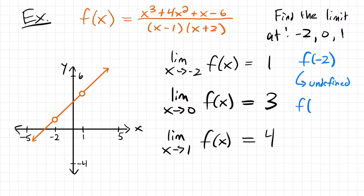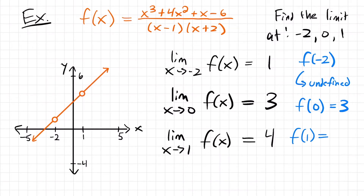Now let's look at the function at the point 0. In this case, 0 does have a value — we plug in 0 and we get 3. So those two things match up: our limit goes to 3 from both sides as we approach 0, and the function at x equals 0 also equals 3. At x equals 1, just like at negative 2, we have a hole, so the value is also undefined. The limit is not always going to match up with our actual value, because a limit only describes what is happening near a point, not necessarily what the value is at that point.